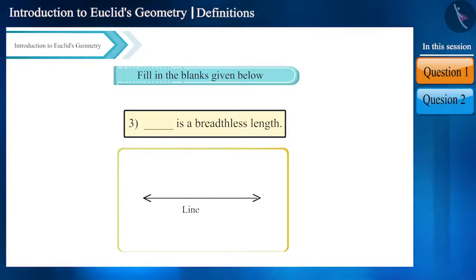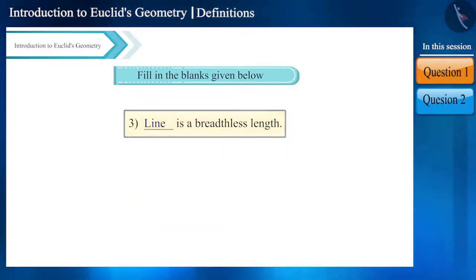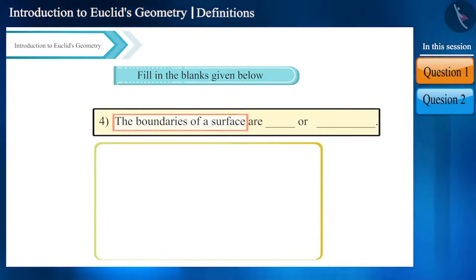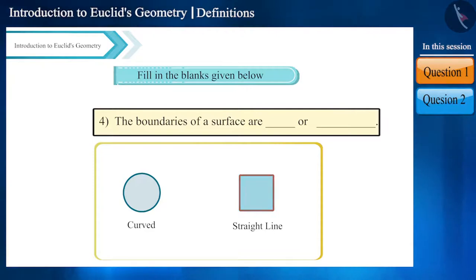Look at the fourth and the last blank. Here we are talking about surface boundaries. The boundaries of a surface are either curved or a straight line. Therefore, the answer for the first blank will be curved, and for the second blank it will be straight line.